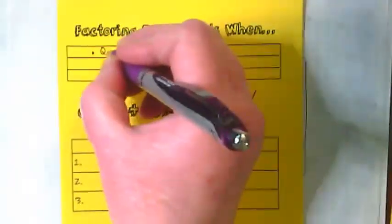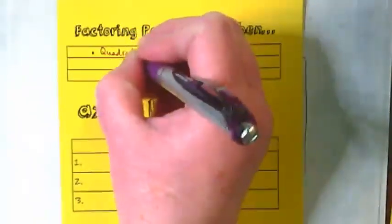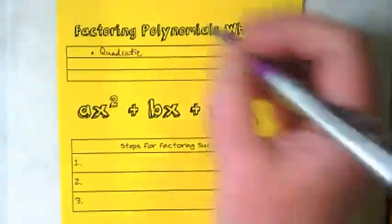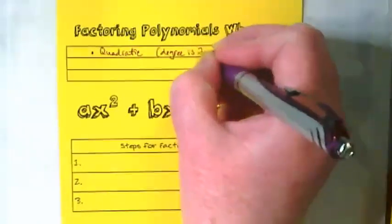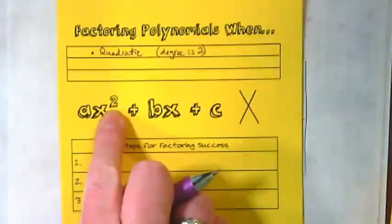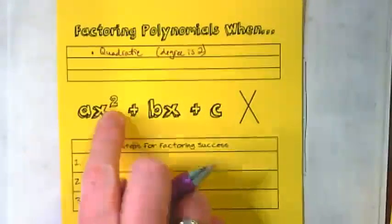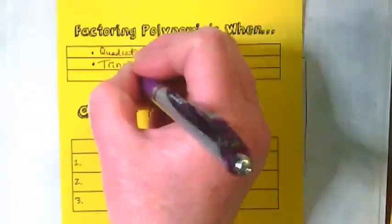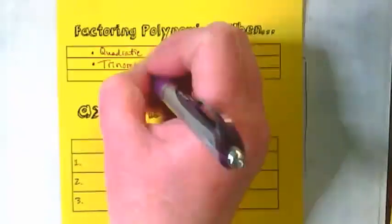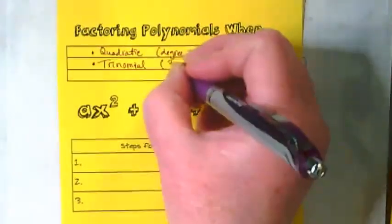Just like our first notes, we want to make sure that we have a quadratic, so the degree is 2, which we see here. Again, this is a trinomial, where we have three terms.